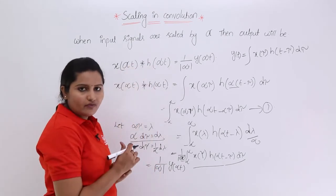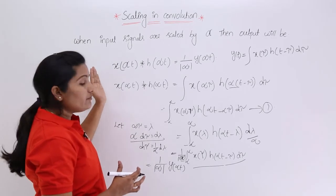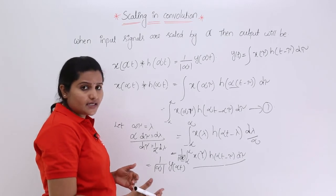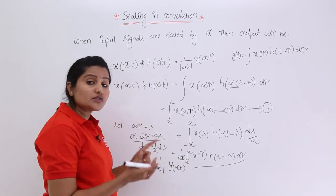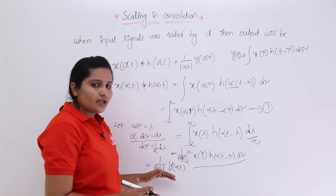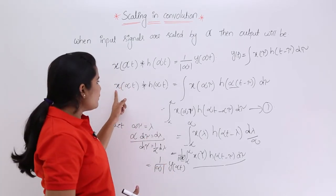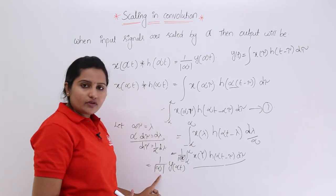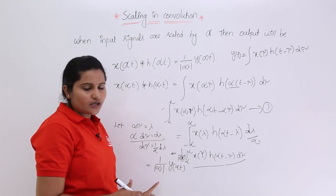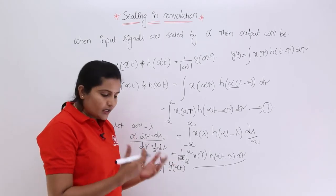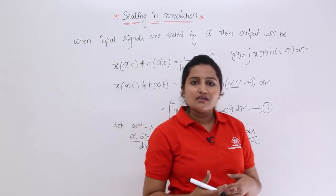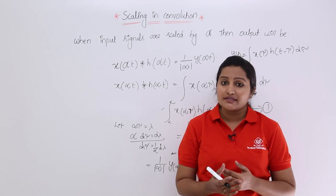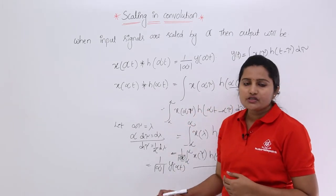So when any signal and its impulse response are both scaled by alpha, the output is also affected by the scaling factor, giving (1/|alpha|)·y(alpha·t). In any problem where two signals or a signal and its impulse response are convolved with a scaling factor alpha, you must scale the output accordingly as (1/|alpha|)·y(alpha·t).